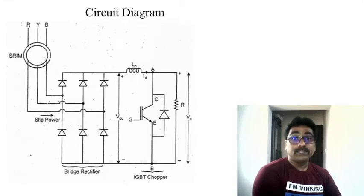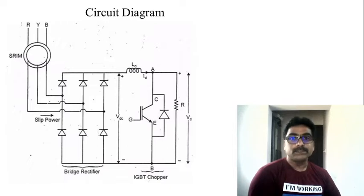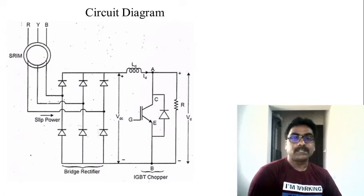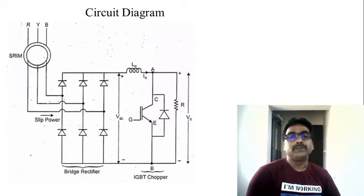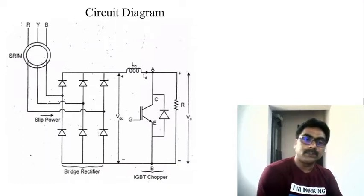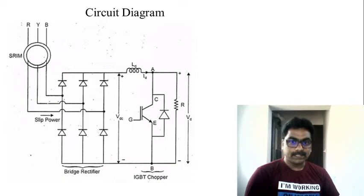I will go quite fast with the operation of the circuit and derivations to limit the time. This is the circuit diagram of the static rotor resistance control of induction motor drive. The stator is connected to the three-phase power supply, and the rotor side is taken out and connected to the resistor through two different power electronic circuits. The rotor side is directly connected to an uncontrolled rectifier — a three-phase diode rectifier — which converts the AC output into DC.